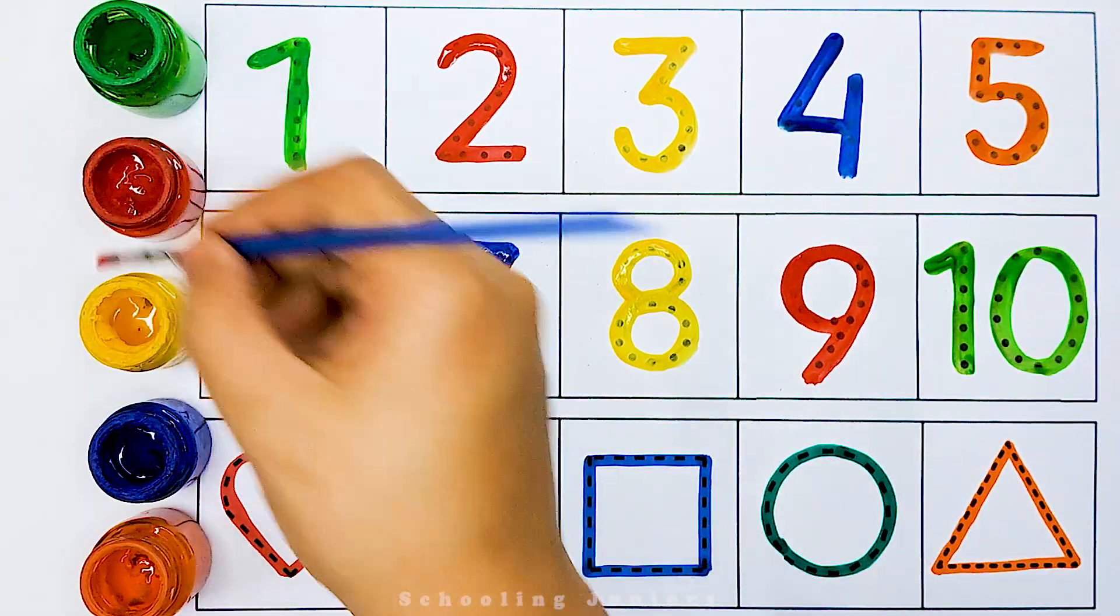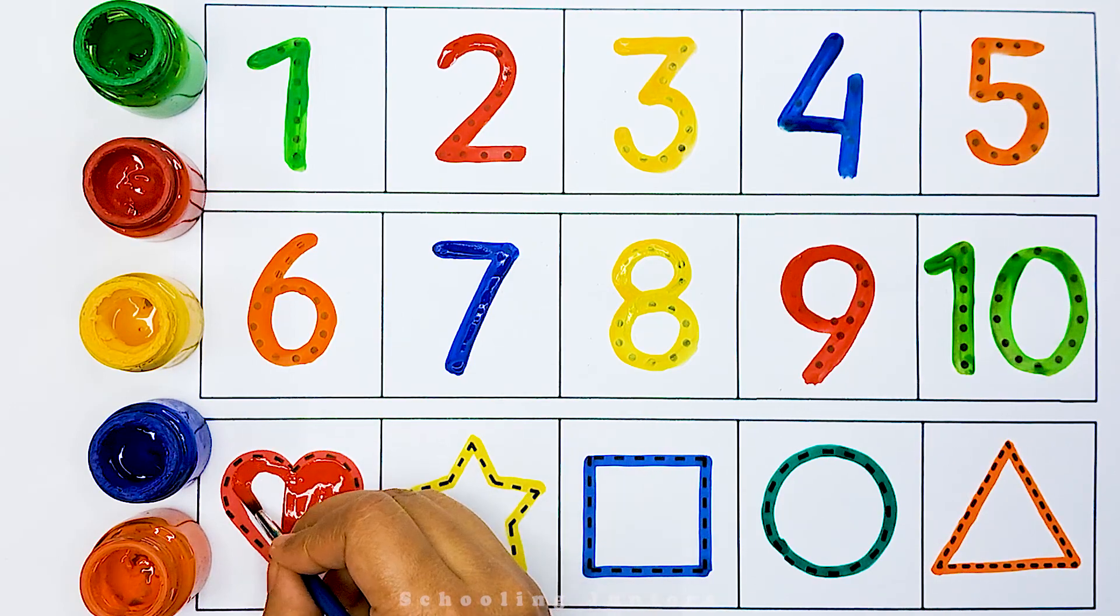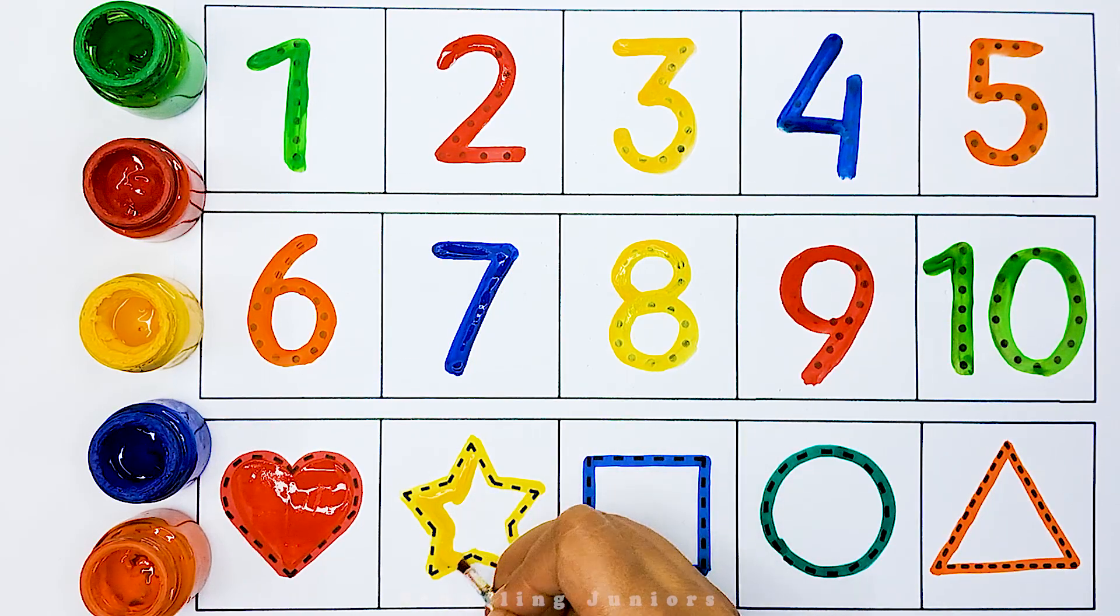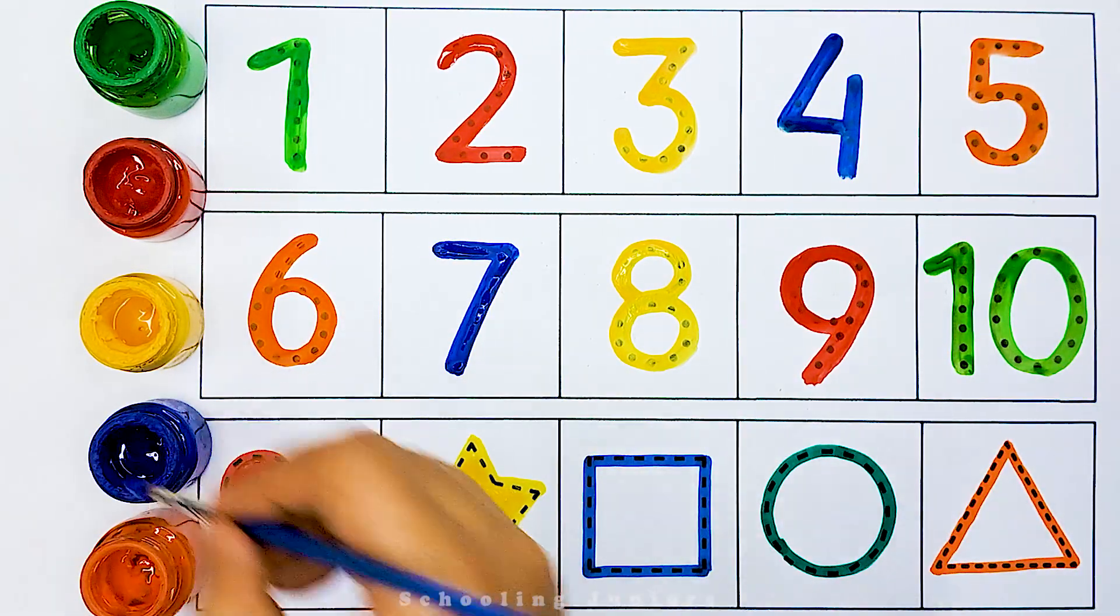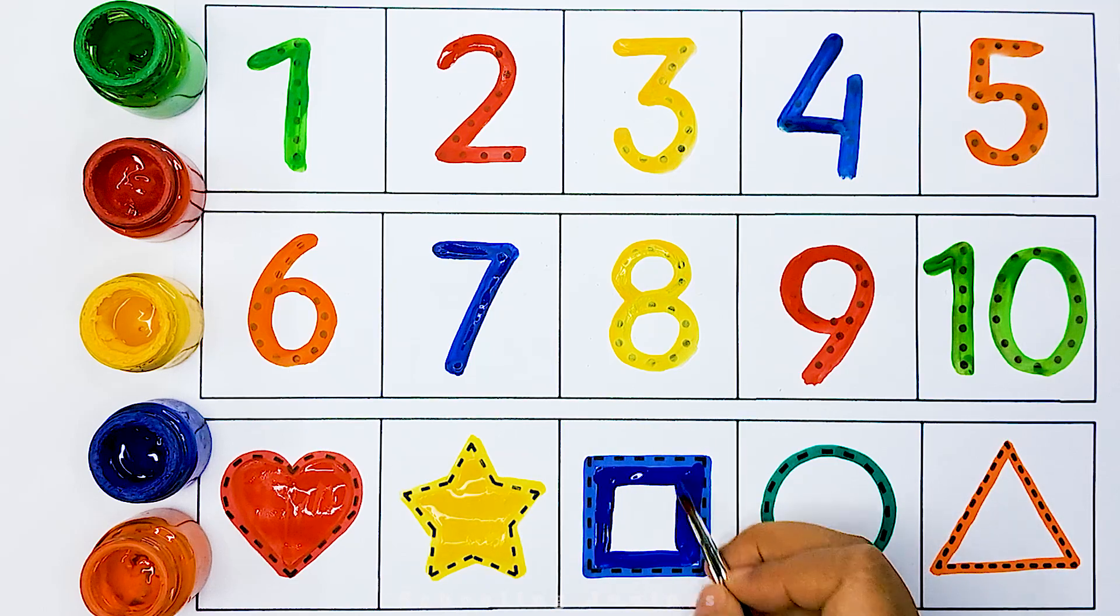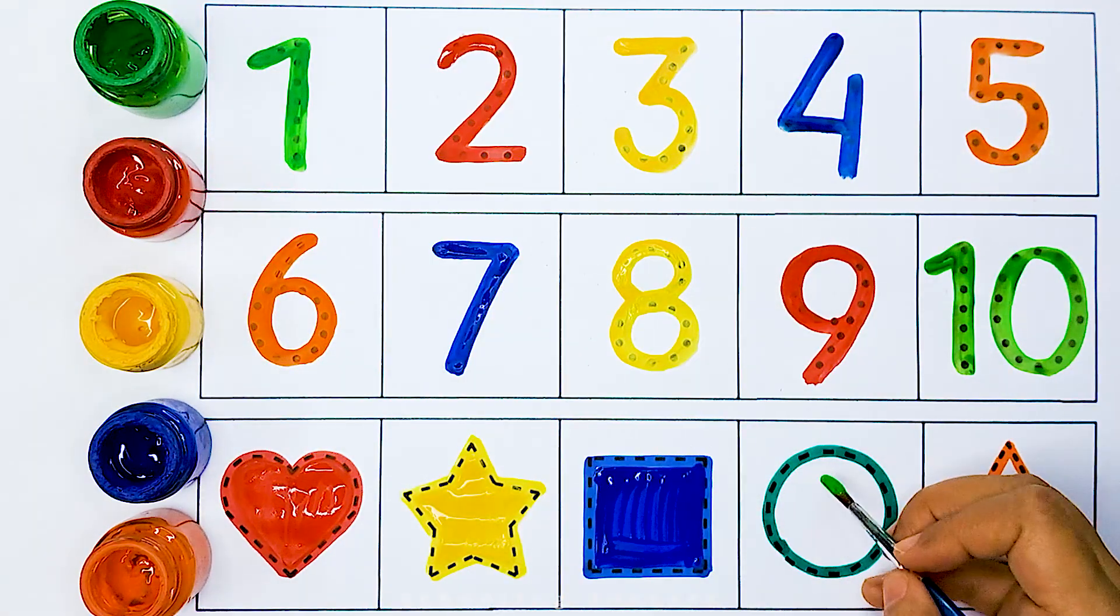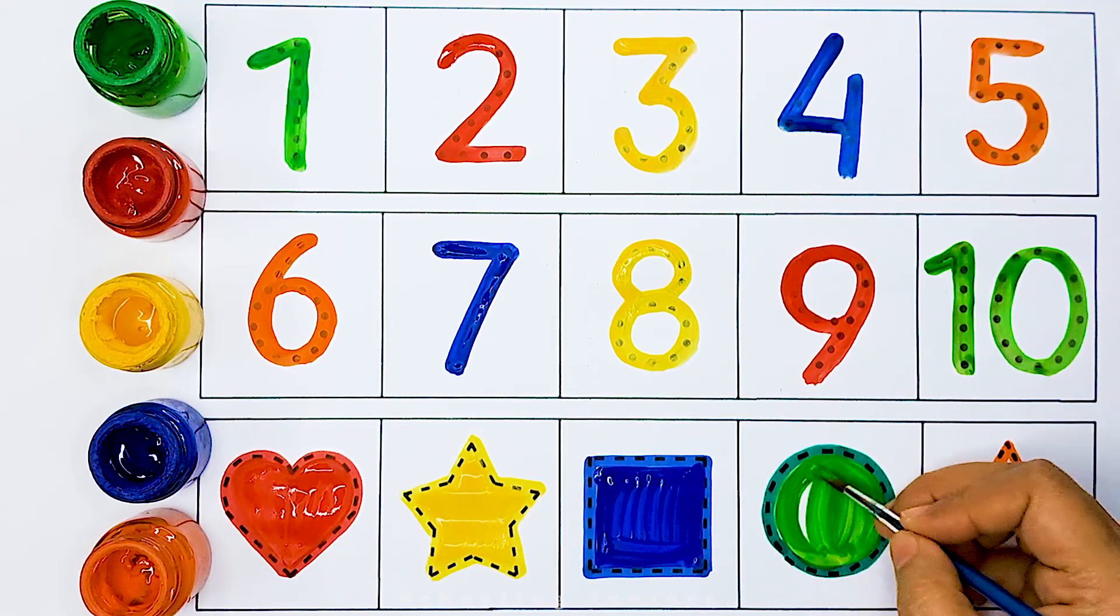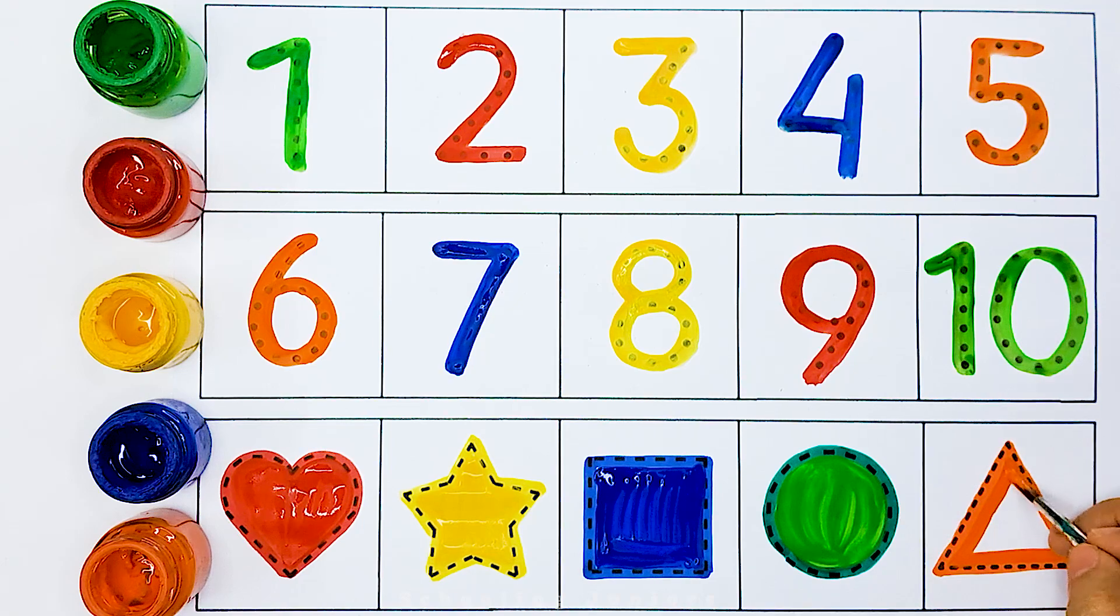Triangle. Red color Heart. Yellow color Star. Blue color Square. Green color Circle. Orange color Triangle.